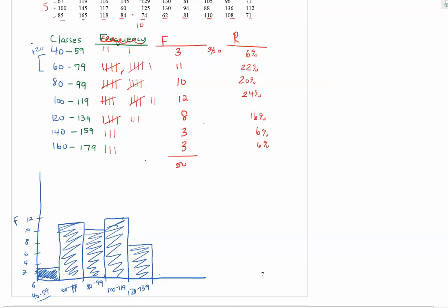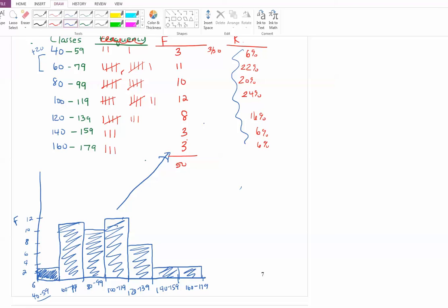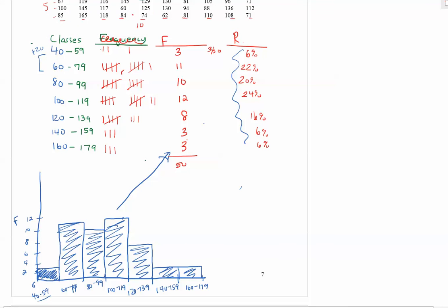And then I have a bar that is 120 to 139. It has a frequency of 8. And the final two bars have a frequency of 3, so they're going to have the same height. So this is the histogram. The histogram comes from your frequency distribution. You could do a histogram that would be a relative frequency histogram, and the only change is that your y-axis would have the percentages instead of the frequencies.